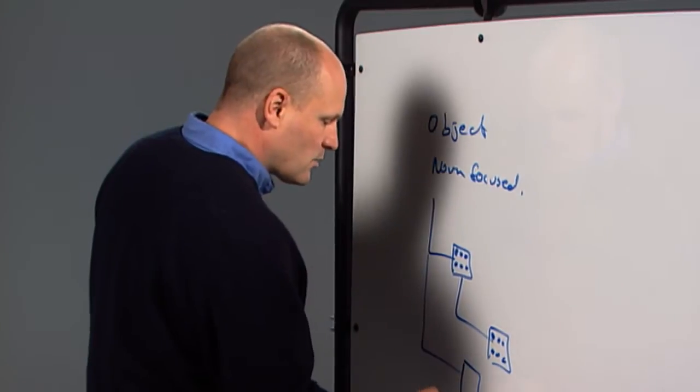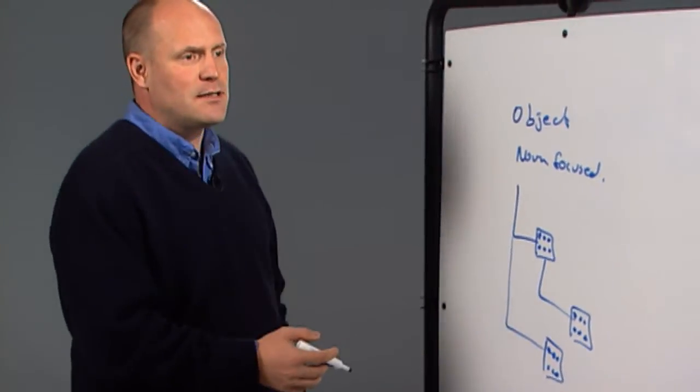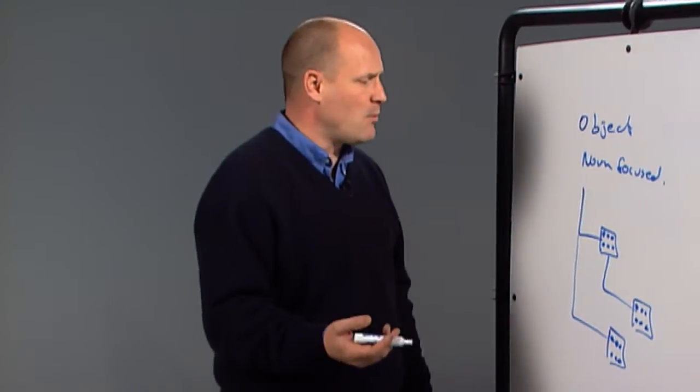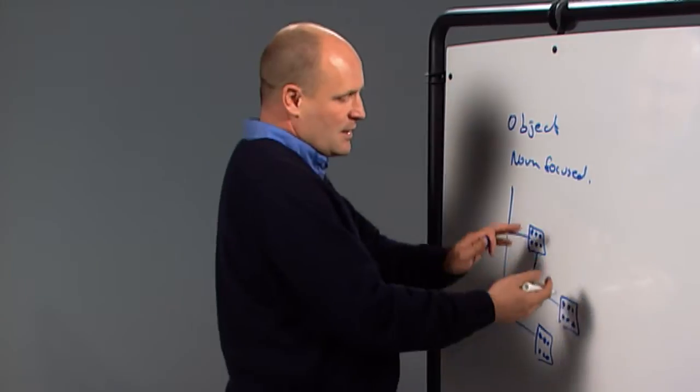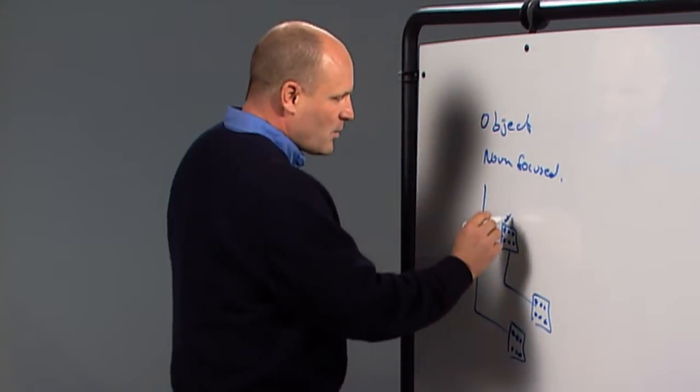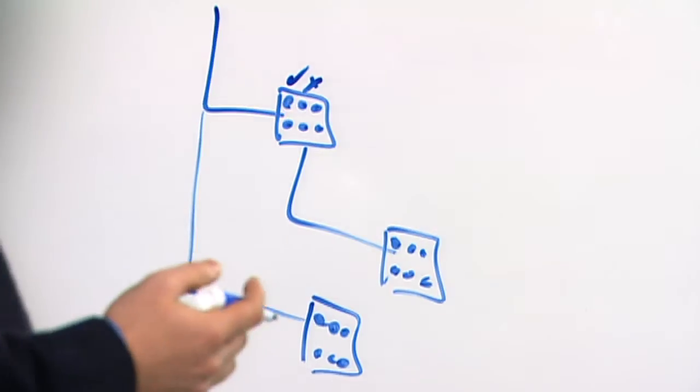When you start thinking about access controls on those things, you start saying, okay, I can read one of these things, or I can write to them. I'm going to modify some of its properties, either the container or the object. And clearly, I can inherit some of these things. But really, I'm putting a set of check marks or X's on there on read and write access for these things.